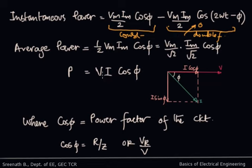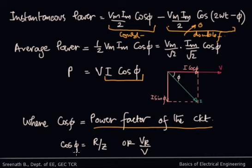The average power V·I·cos φ represents V multiplied by the in-phase component of current, I cos φ. Here, cos φ is the power factor of the circuit and can be calculated from the impedance triangle as R/Z, or from the voltage triangle as Vr/V.